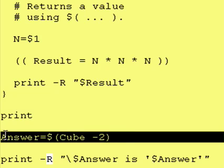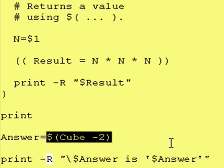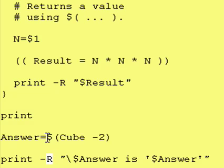And here we are calling our function and we're giving it a value of negative two. Negative two cubed should be negative eight. And once again, what this says right here is that anything that would normally go to the output screen would instead get captured and put right here.